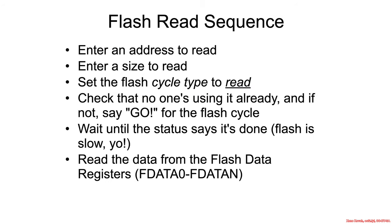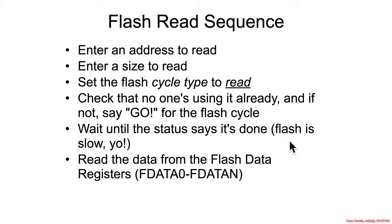What is the sequence you do to read? You enter an address to read, you enter a size to read, you set the flash cycle type to read — specifying what kind of action you want to take — and then you check whether anyone's using the flash right now. You want exclusive access, and if no one's using it, you say go and start the read cycle. The chip will take a while — it might be running at 20 to 60 MHz — but when the data comes back, it will be stored in the FDATA registers 0 through N, so up to 64 bytes, 32 bits at a time in the flash data registers.